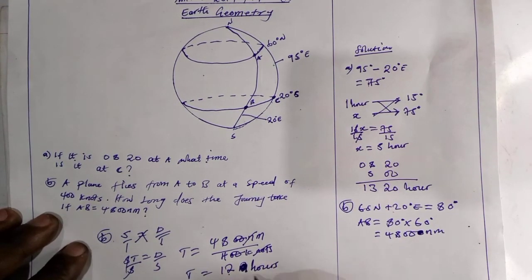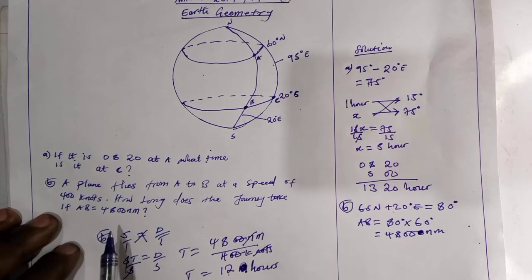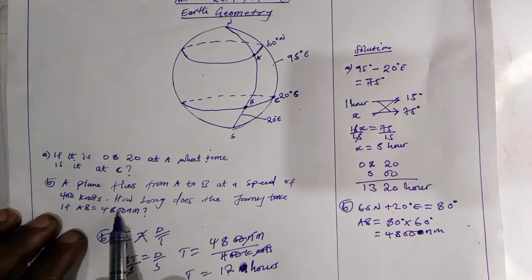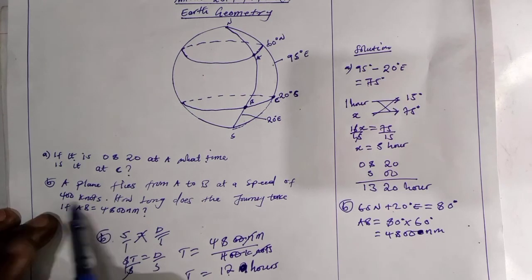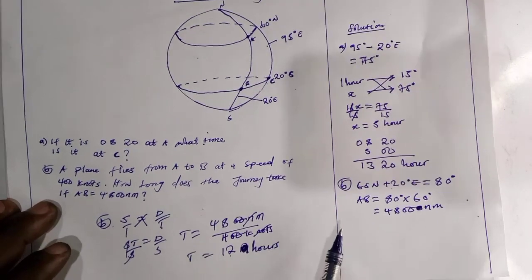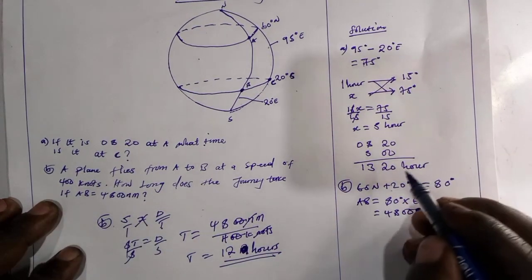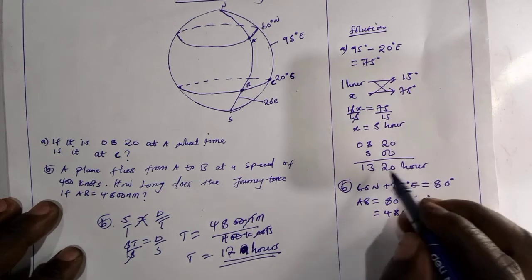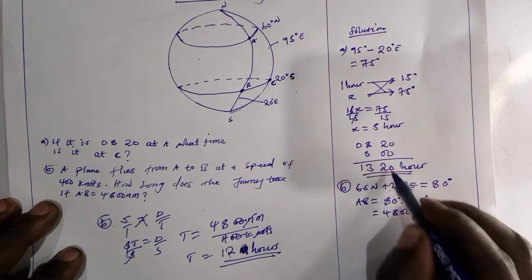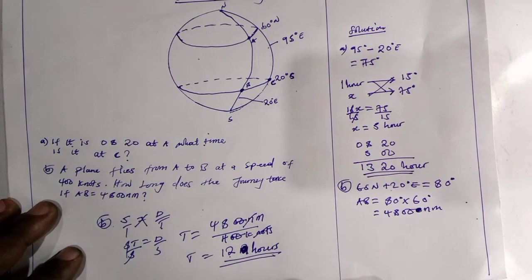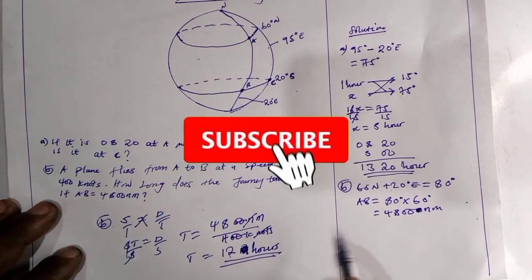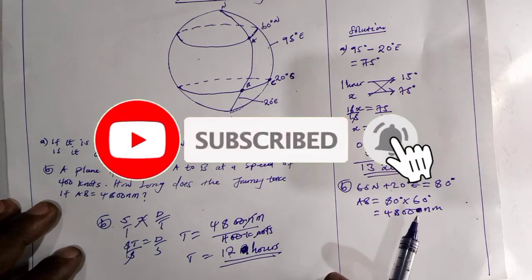That's how long it takes to cover the distance at this speed. For part B, we have 12 hours. For part A, we have 13:20 hours. Thank you for watching and don't forget to subscribe and turn on the notification bell.